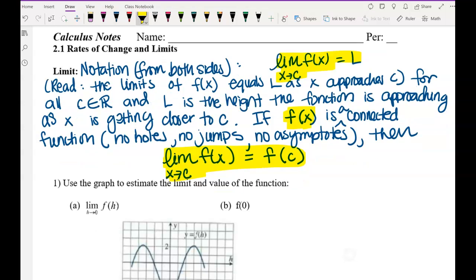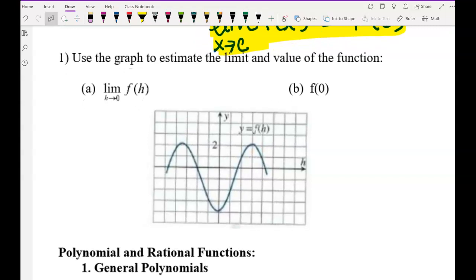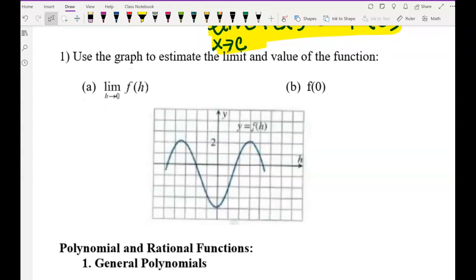So let's do example one: use the graph to estimate the limit and value of the function. Now look at this. Part (a) says limit of f(h) as h approaches zero - this is the calculus notation. Part (b) says f(0), students - this is the algebra one notation. So let's do b first.